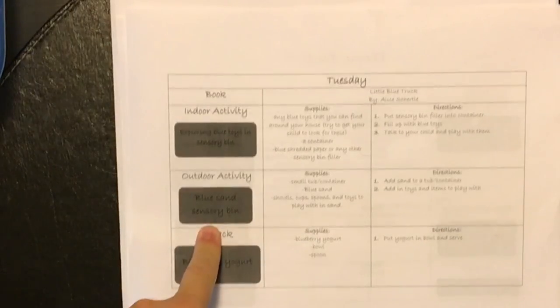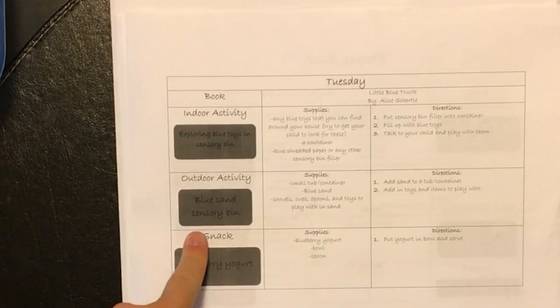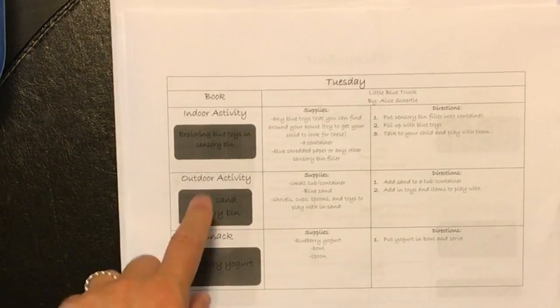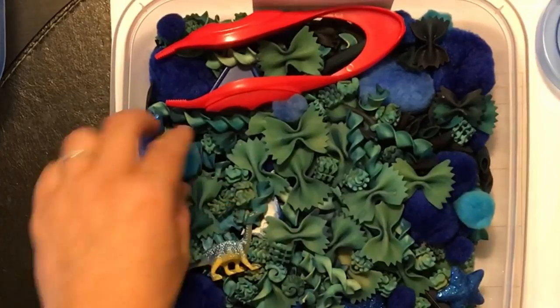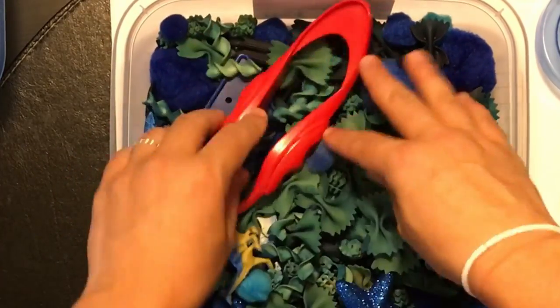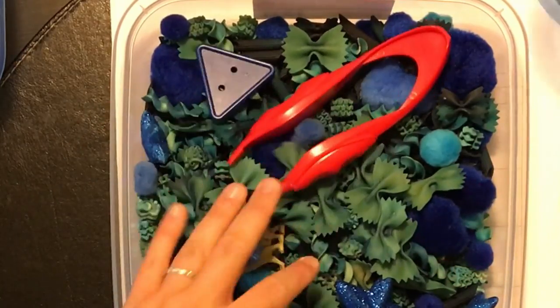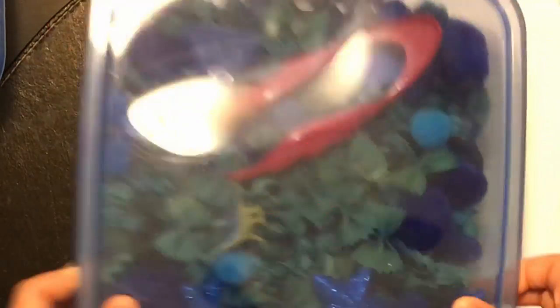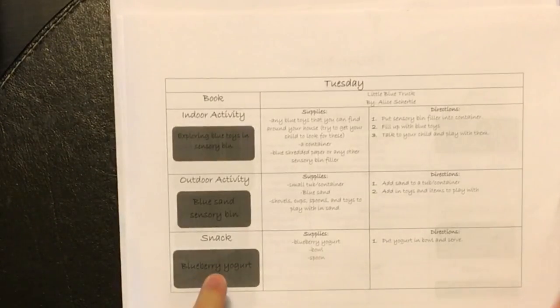And then it says blue sand in sensory bin, but I actually... My blue sand got ruined in the rain the other day, so I had to change this to blue noodles. So I just collected all of our blue noodles, and I put some little blue pom-poms and dinosaurs and just different little things in here that he can try to pick out. Some big blue buttons. And that will be for that. And then that snack that day is blueberry yogurt.